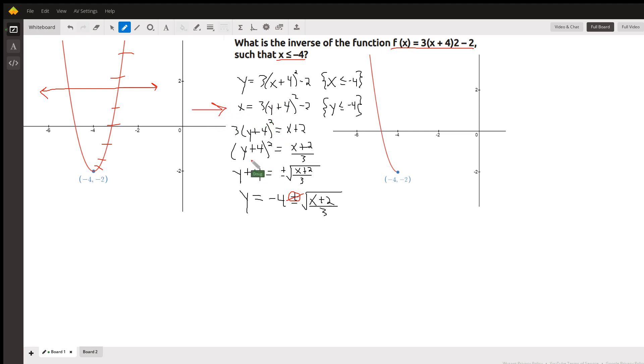Now when we reach this point right here, to get to here, we take the square root of both sides. We can say plus or minus the square root of x plus 2 all over 3.